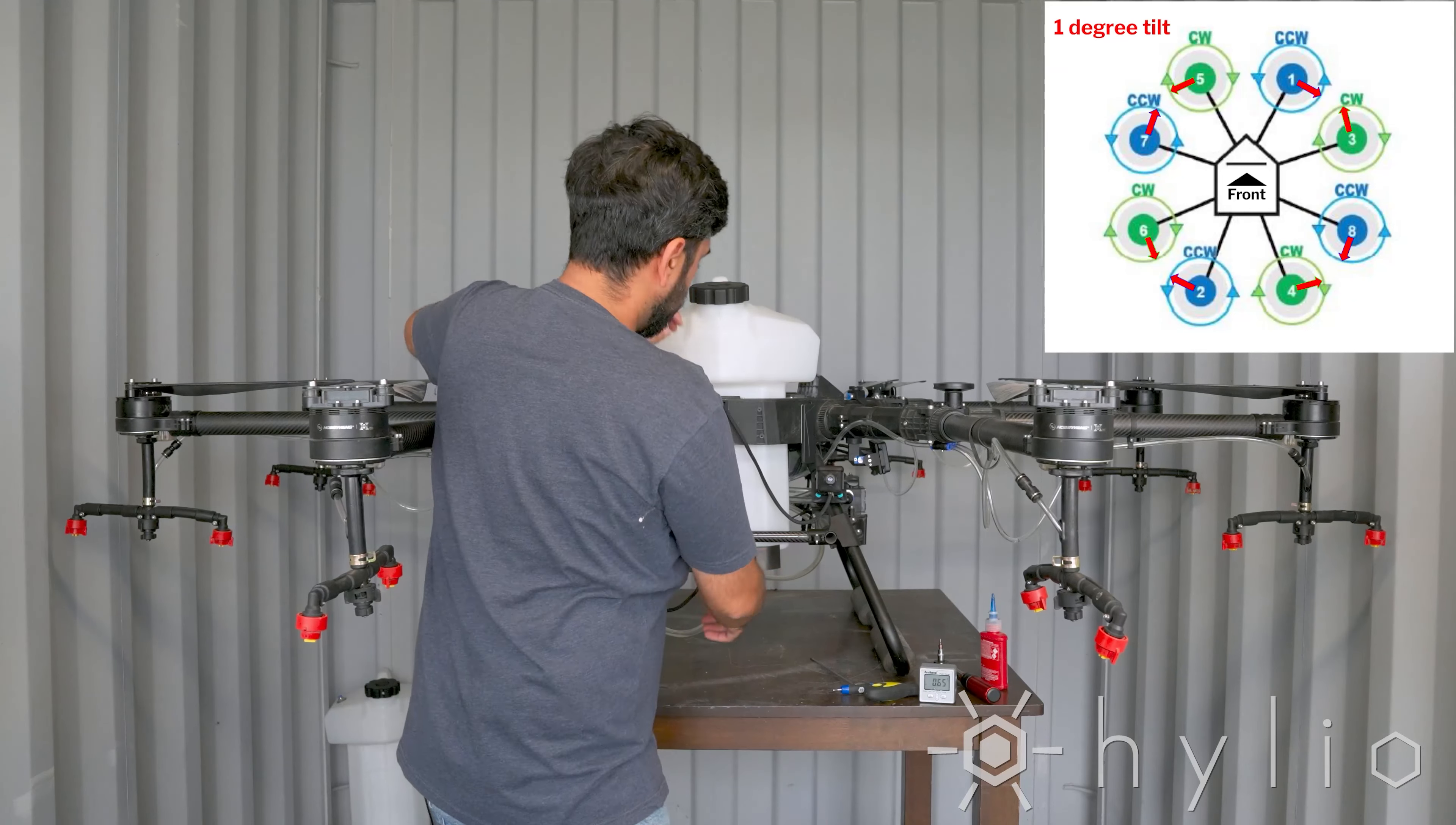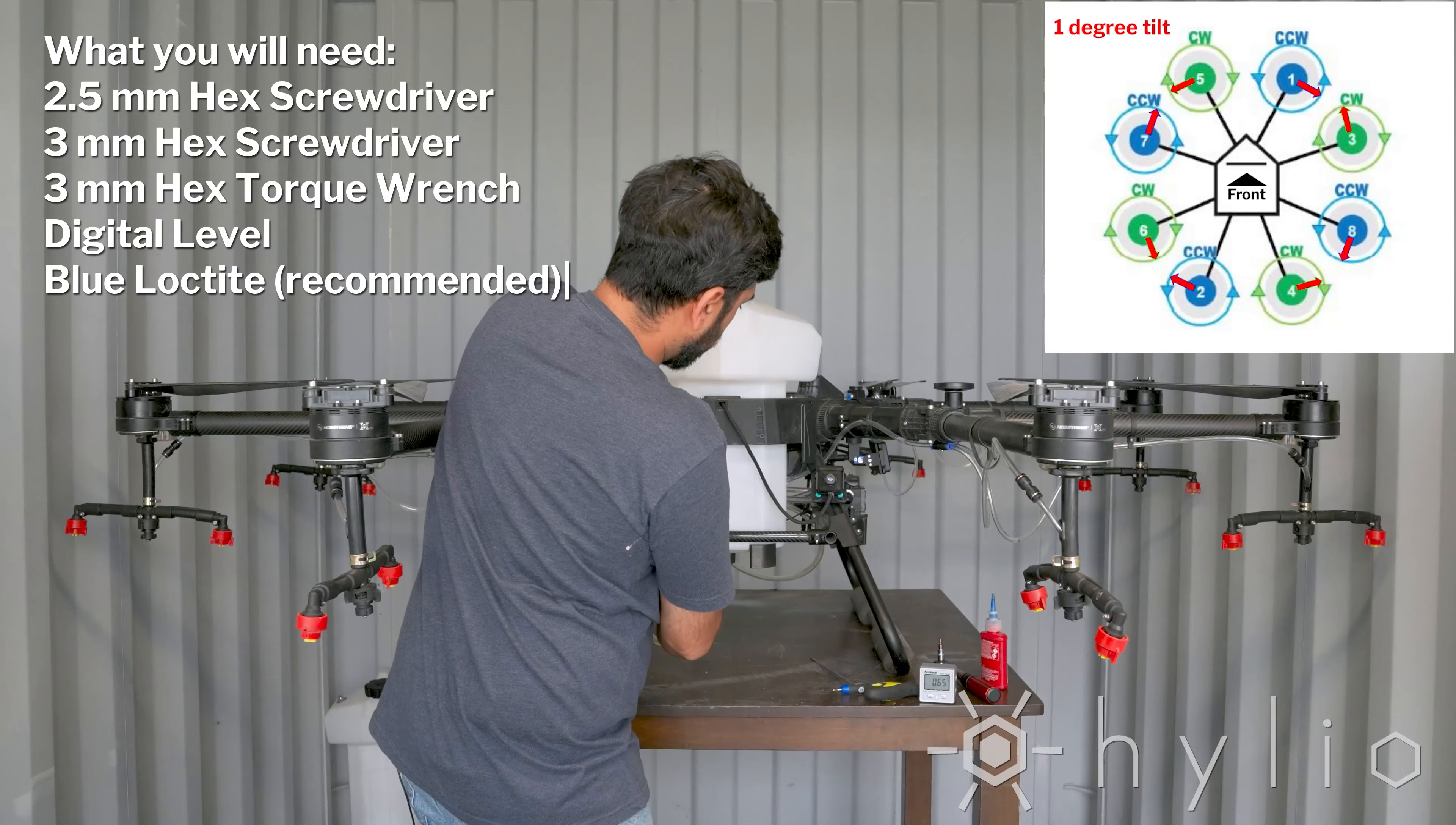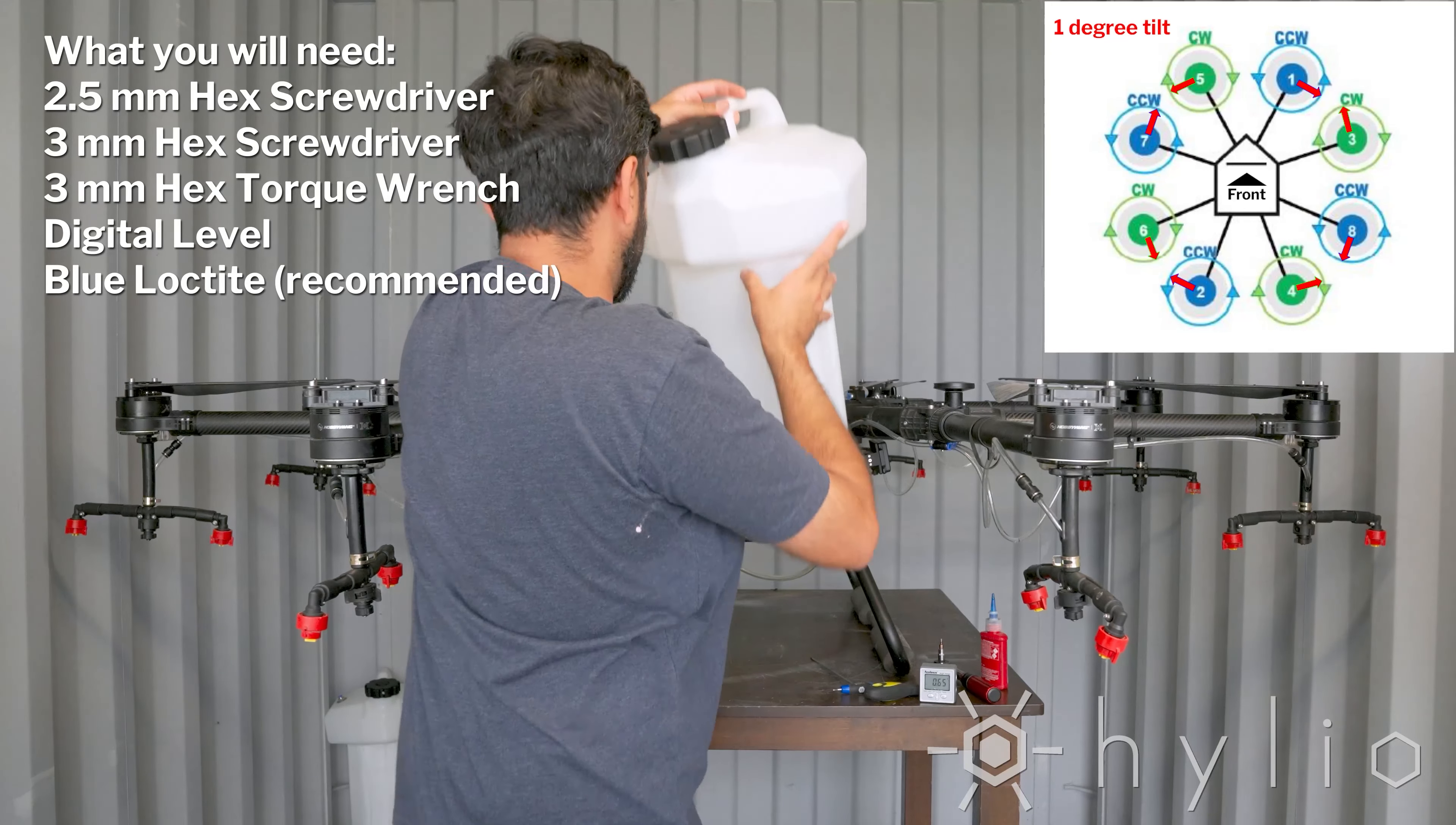Go ahead and unplug both tanks by undoing the tubing from the top and bottom. Unscrew the waterproof connector for the empty tank sensor and remove the tanks.